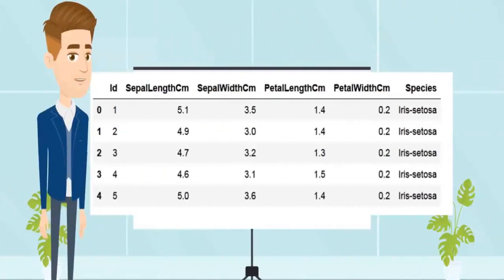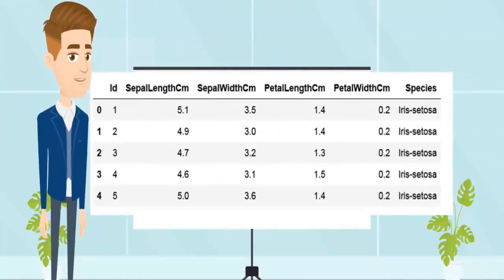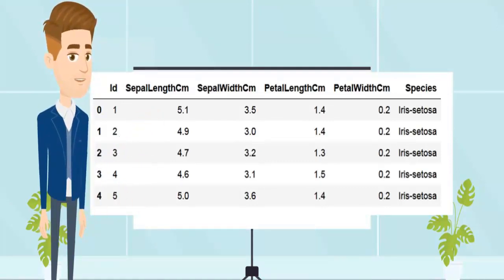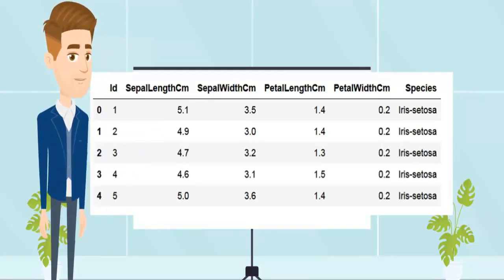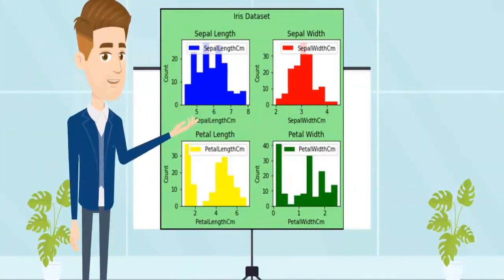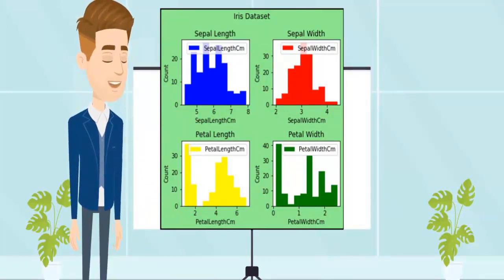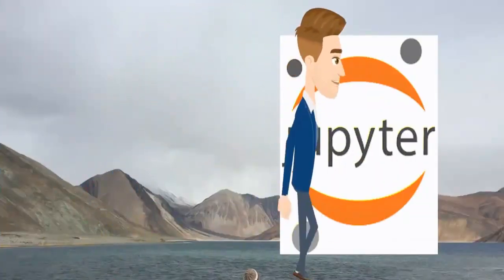So let's get started discussing subplots using matplotlib. We are going to use the hello world dataset for machine learning — the iris flower dataset. As you can see, it contains four features: sepal length, sepal width, petal length, and petal width in centimeters, and one target variable — species. We are going to draw subplots for all four iris flower dataset features in one figure.